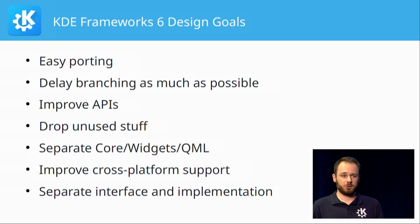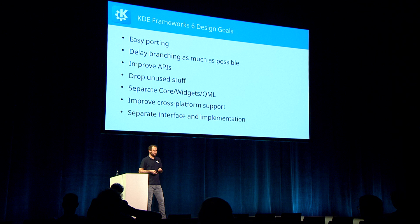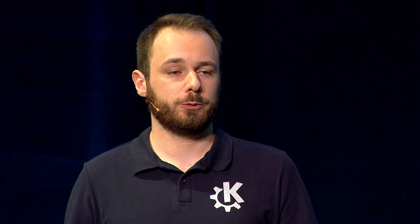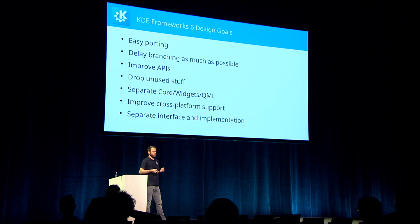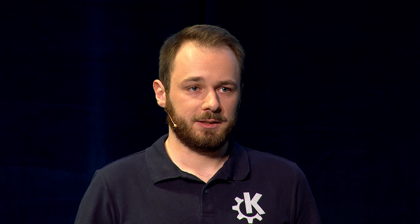We want to drop things that are rarely or never used — for example KHTML, the precursor of modern-day Chromium, was very nice back in the day but is not really used by anything now, so we want to formally retire that. Some of our APIs are also entangled with Qt Widgets in ways they don't have to be. For example, in a couple of places we pass a QWidget pointer just to set a parent window, and by replacing this with a QWindow we get the same functionality without a Qt Widgets dependency, making the API more flexible and easier to integrate with QML-based applications.